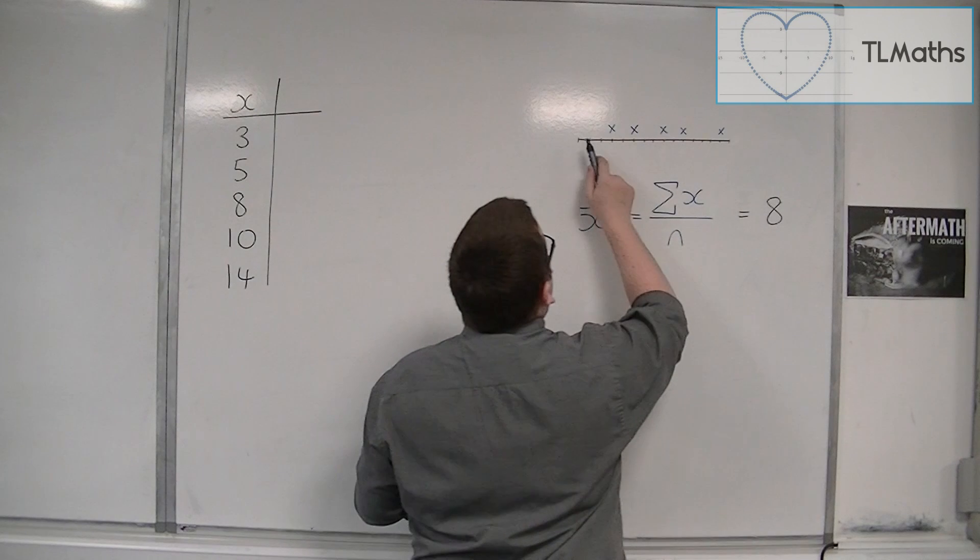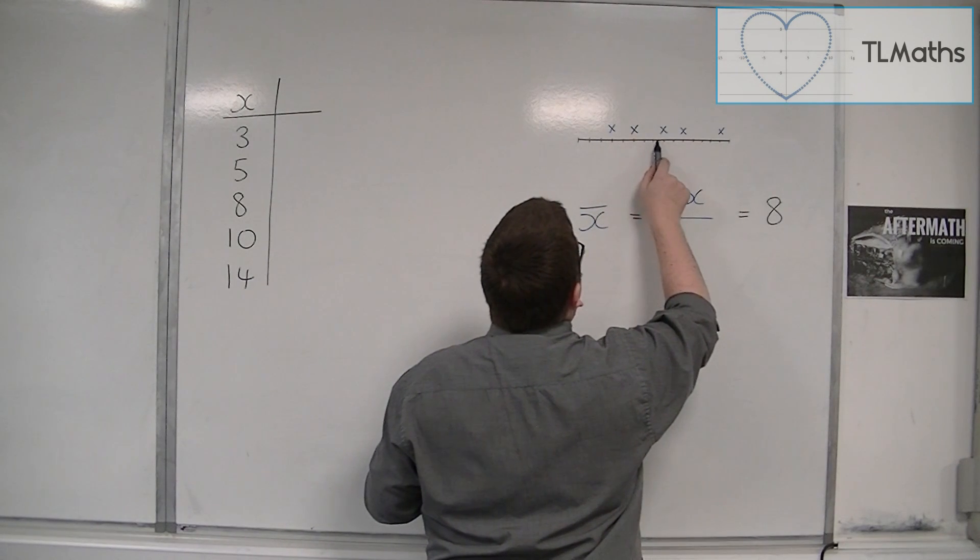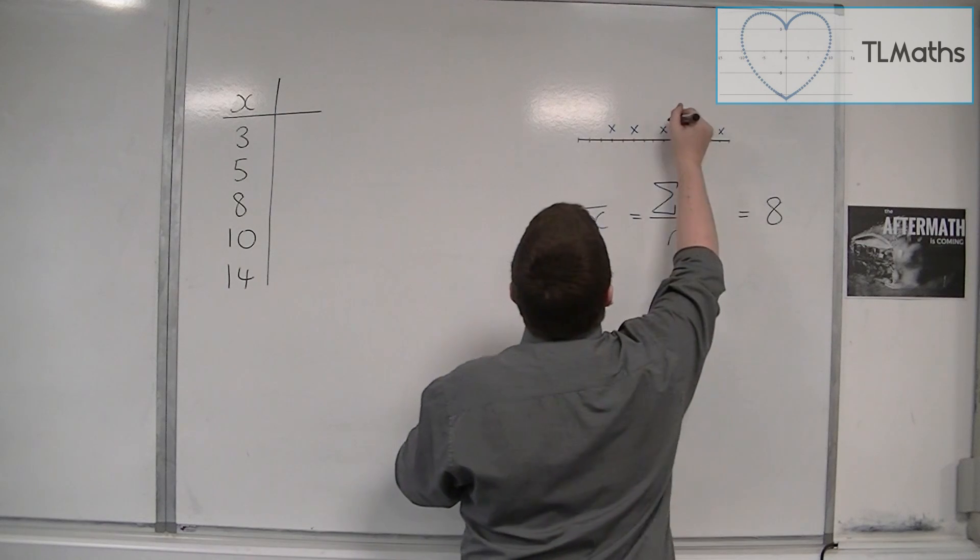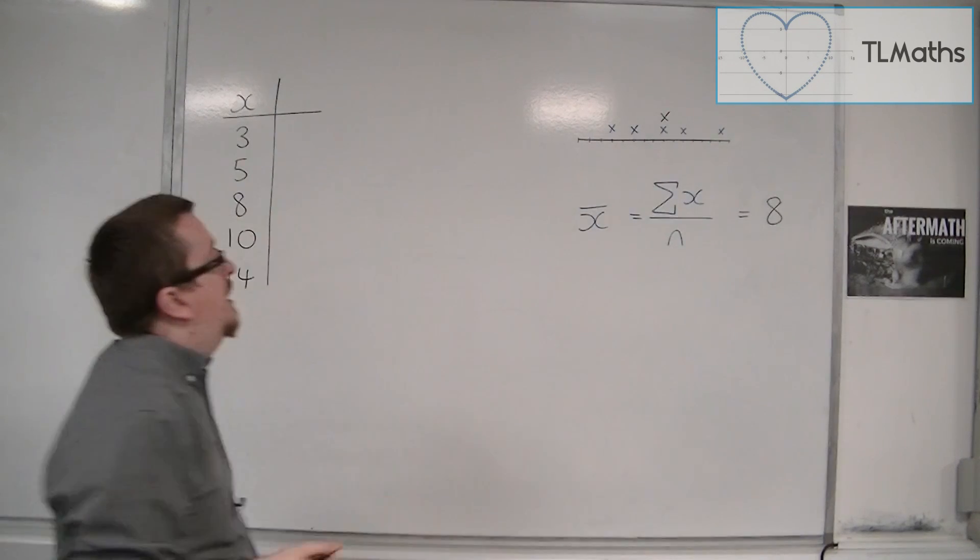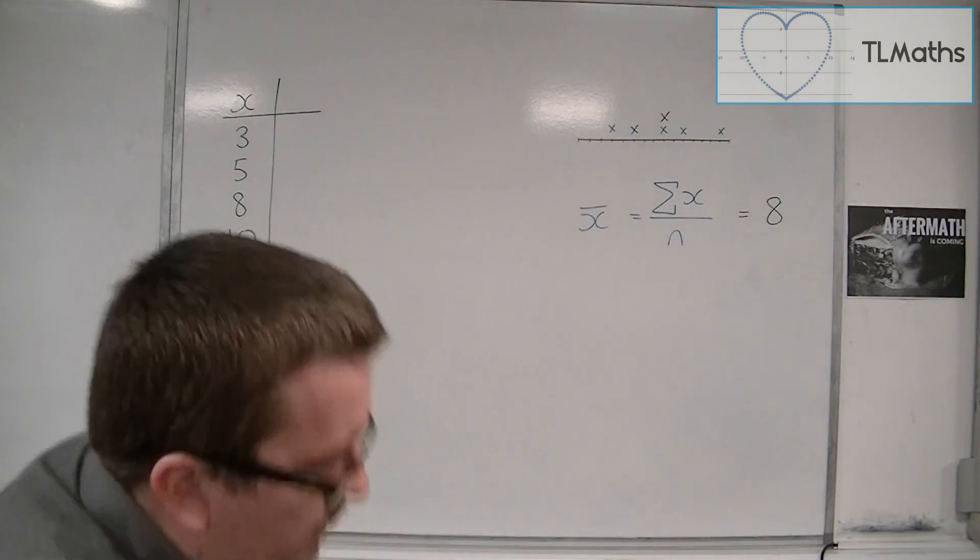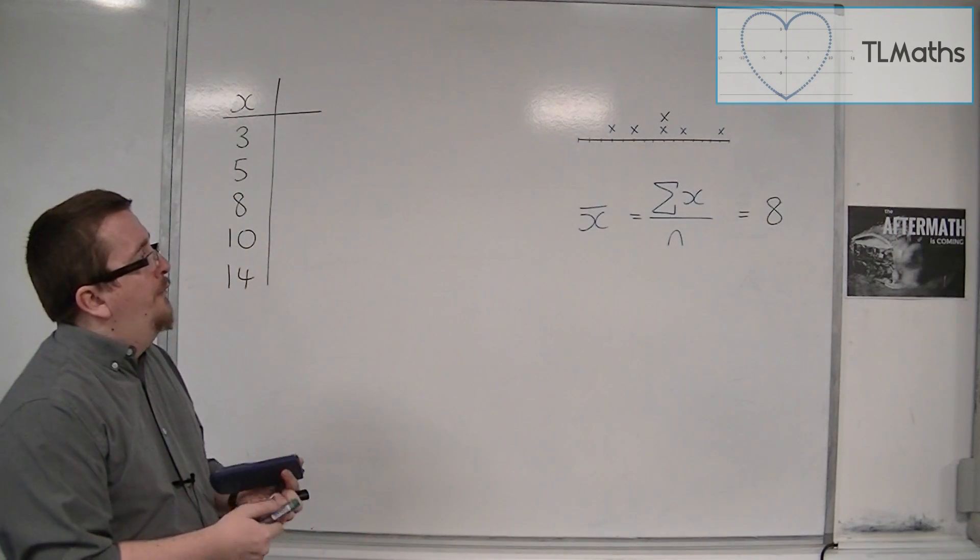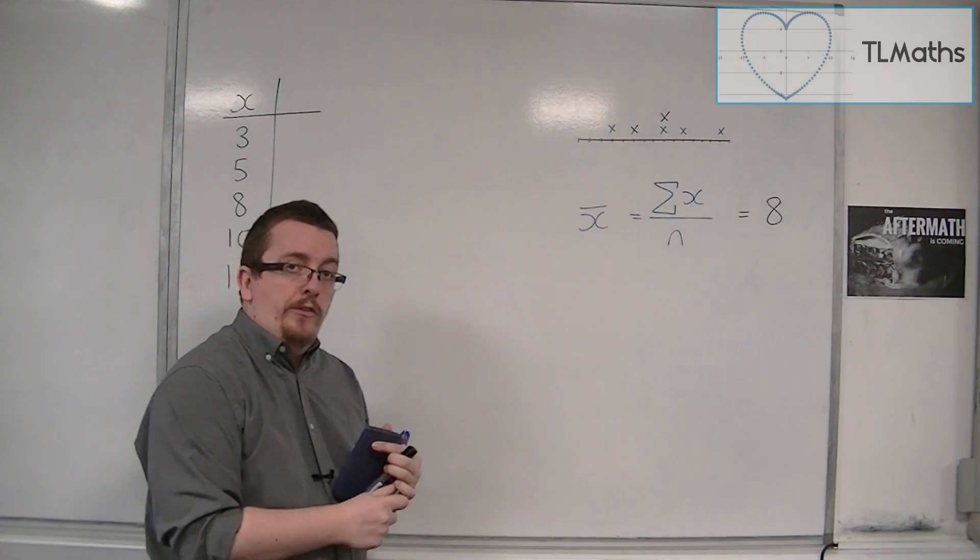So on our number line, 0, 1, 2, 3, 4, 5, 6, 7, 8. So this is our mean. As I said, we're going to look at how far each data point is away from the mean.